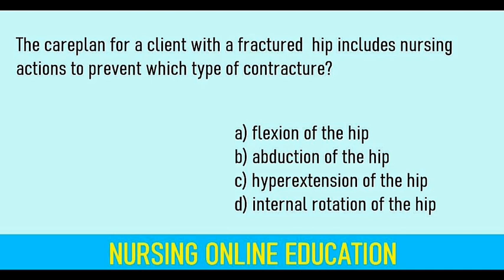The care plan for a client with a fractured hip includes nursing actions to prevent which type of contracture? Options — Flexion of the hip, Abduction of the hip, Hyperextension of the hip, Internal rotation of the hip. Answer: Flexion of the hip. After a fractured hip, muscle spasm and the client's tendency to flex the hip can lead to flexion contractures. The answer is flexion of the hip.